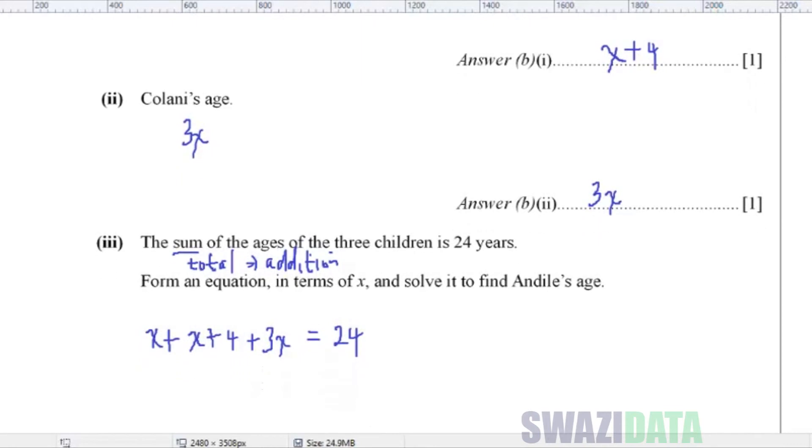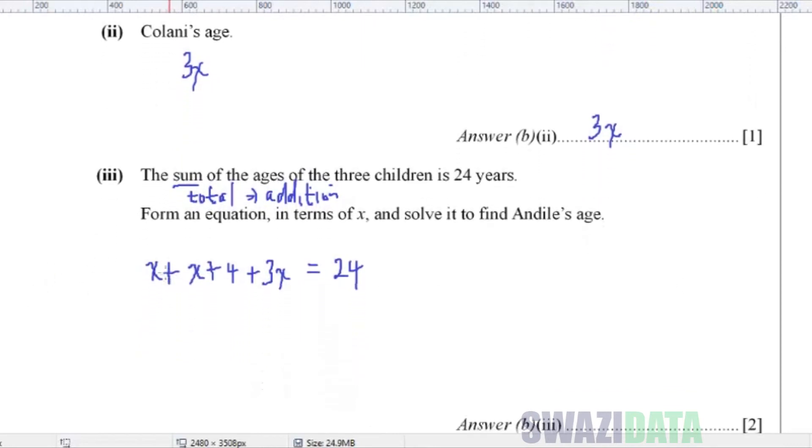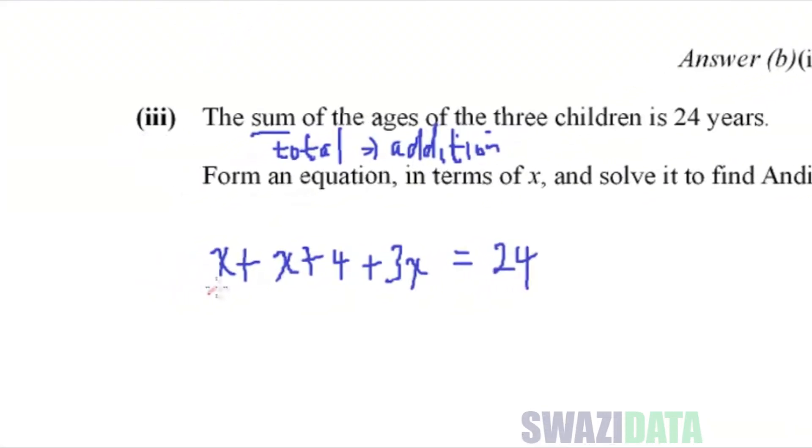So putting all this together, we have to collect the like terms. So we can see that this term, and this term, and this term can be combined. Here we have one, here we have 1X. So 1 plus 1 plus 3 will give us 5X plus 4 is 24.